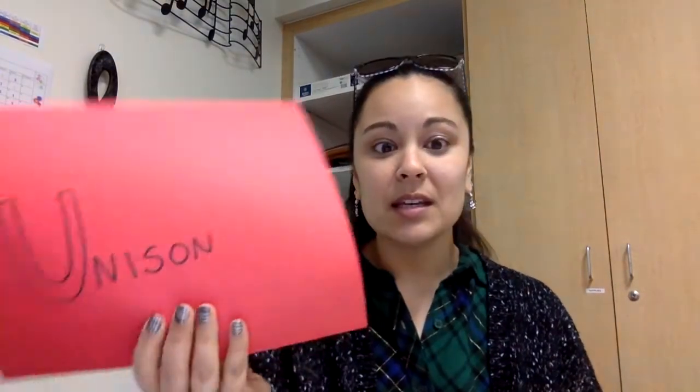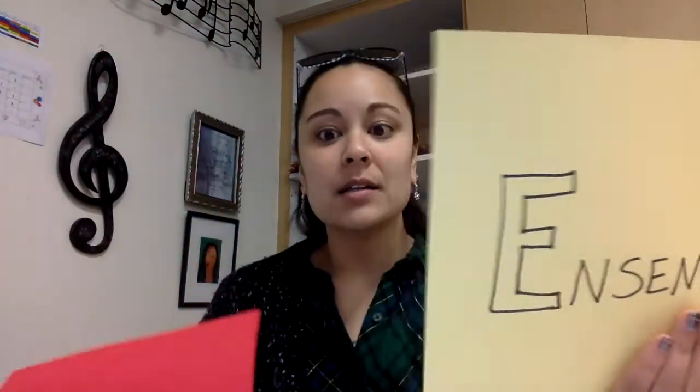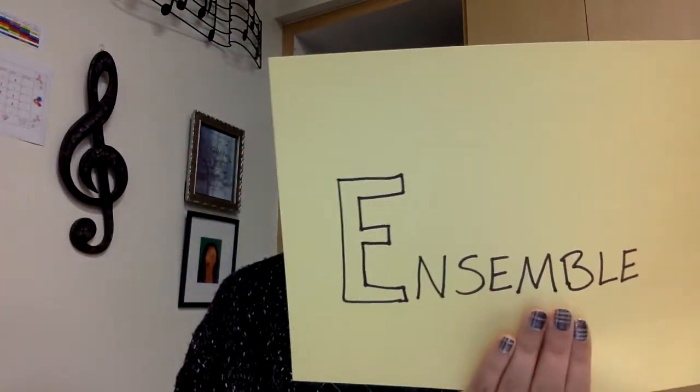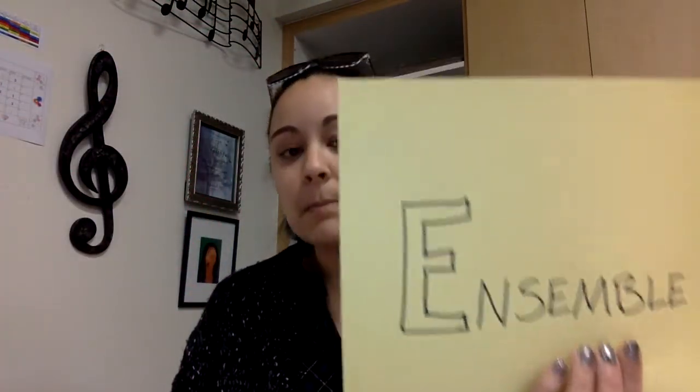Now ensemble means there's a lot of people again singing, but now it's more than one part. So unison is one part. Ensemble is more than one part. It could even be two parts, three parts, up to four, up to ten.